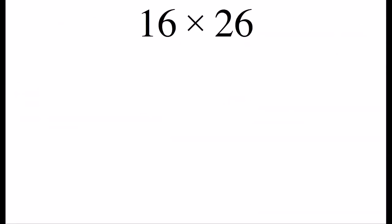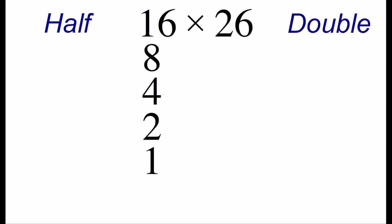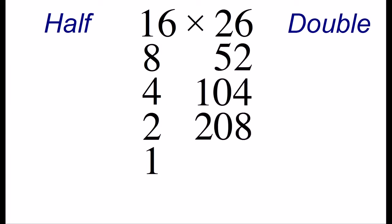Let's do another example to see how this method works. Let's say you wanted to do 16 times 26. The first step is to divide the number on the left in half repeatedly. So dividing 16 in half, we get 8, and then 4, 2, and finally 1. We take the number on the right, and we repeatedly double it. So from 26, we get 52, 104, 208, and 416.